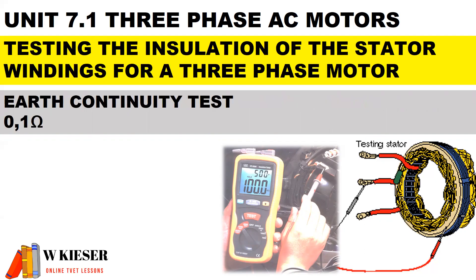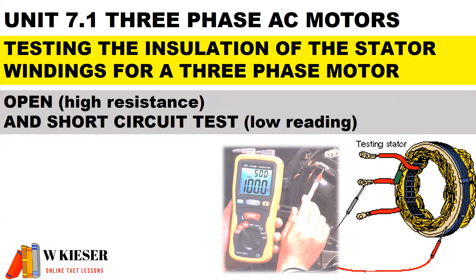For an earth continuity test, you should get a reading of 0.1 ohms. And then finally, we get an open and short circuit test. For an open circuit test, the MEGA will be reading infinity or very high resistance. And for a short circuit, it will be reading a very low reading.